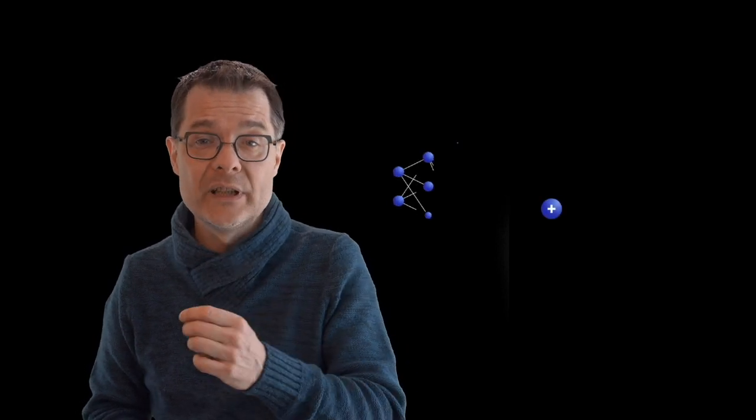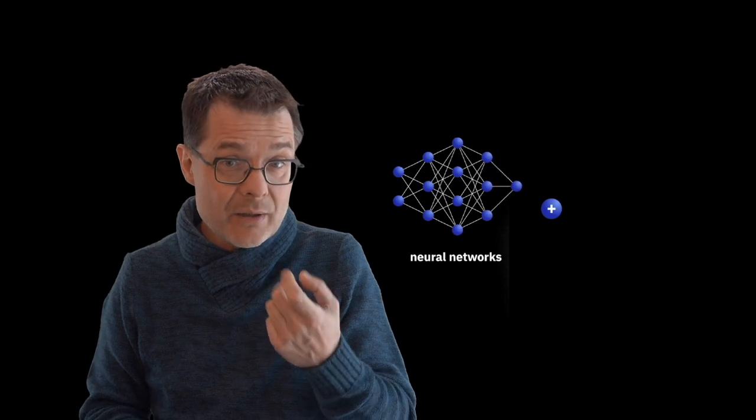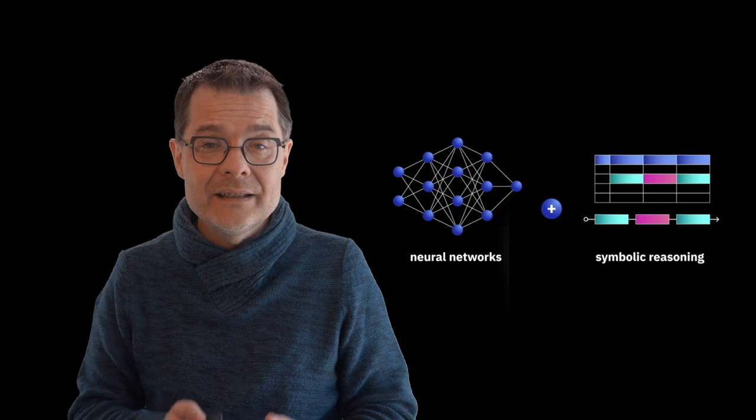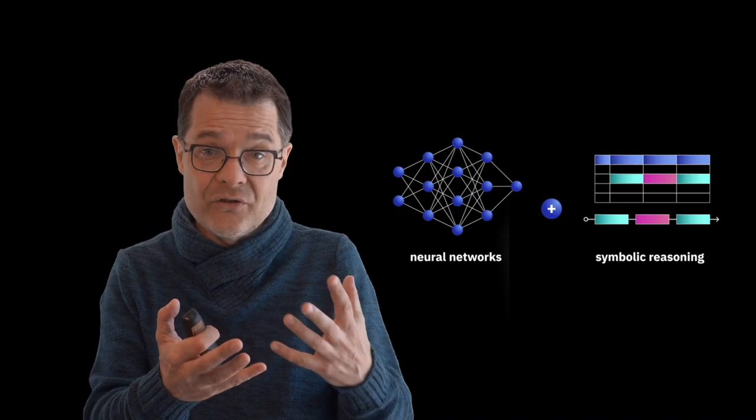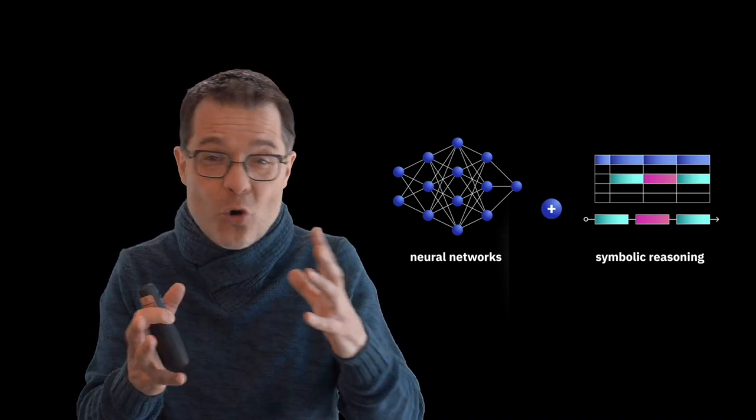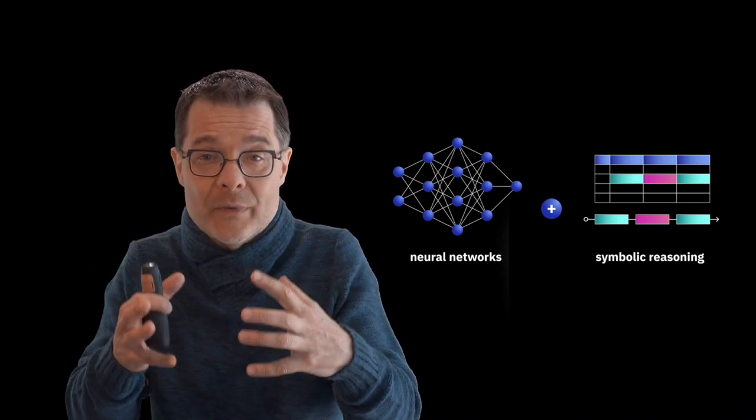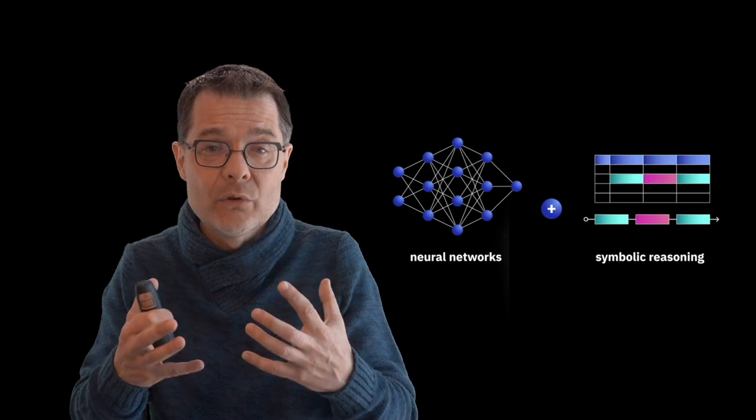So what we are exploring now is a neuro-symbolic approach. It's bringing together the best of the past with the best of today. And the deep learning systems of today, they can discover information in this huge ocean of data. And with the expert system of the past, we add back the common sense reasoning that we were missing.